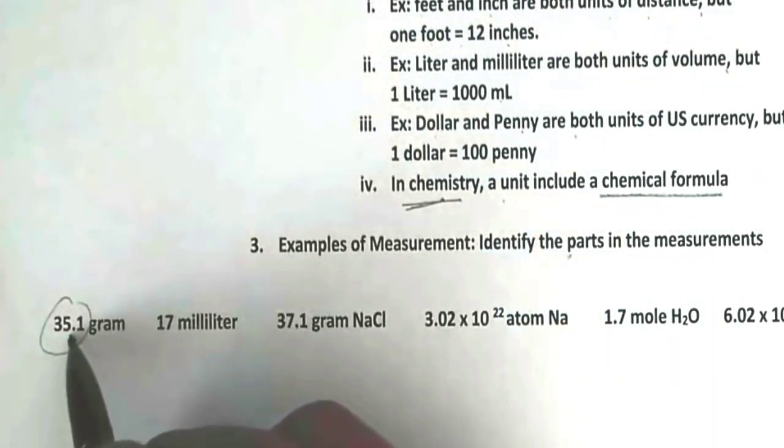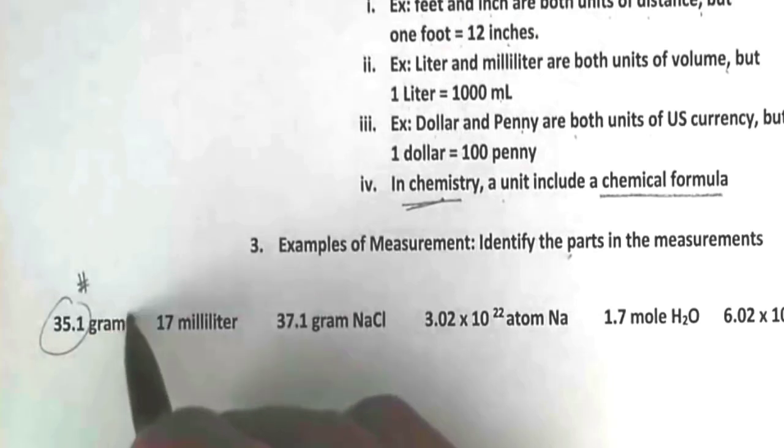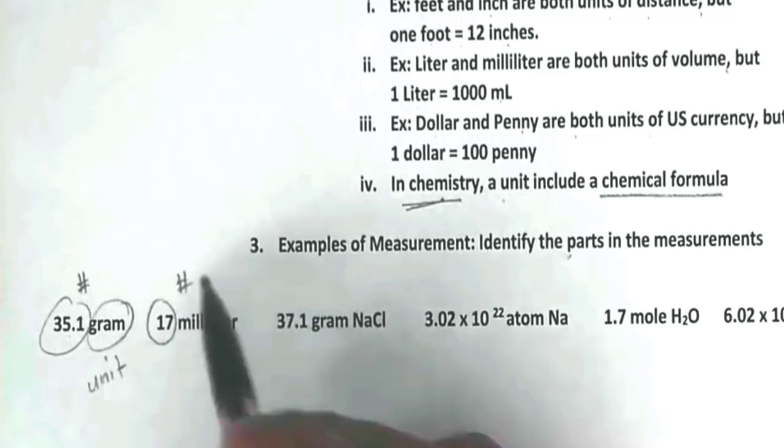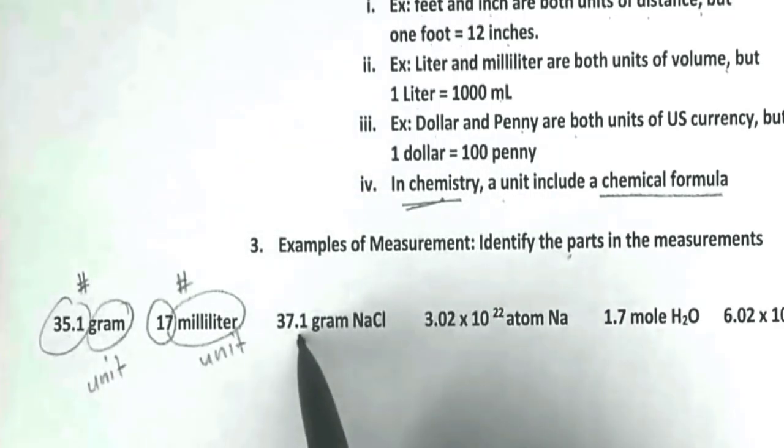We have 35.1, that would be the number. Gram, that would be the unit. 17 would be the number. This would be the unit. 37.1 gram NaCl.